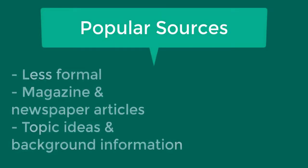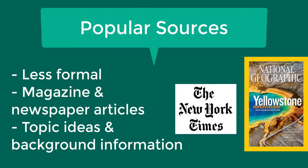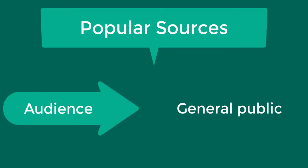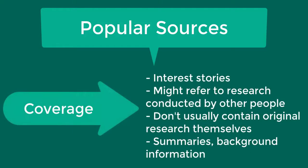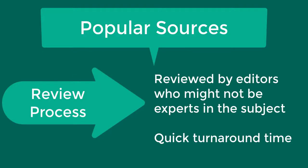In contrast to scholarly sources, popular sources are less formal and are not necessarily written for scholars or students. They include magazine and newspaper articles and can be useful for getting ideas for a topic and for background information. The audience for popular articles is usually the general public. Popular articles usually cover a broad variety of topics and may refer to research conducted by others, but do not contain the original research themselves. The review turnaround time is frequent and may be daily, weekly, or monthly, unlike scholarly articles which require much more time to be reviewed by experts before publication.